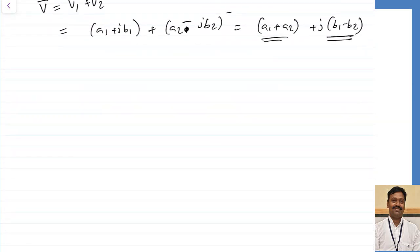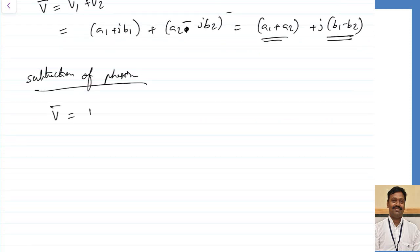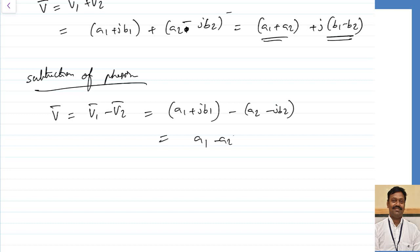For subtraction of phasors, V1 minus V2 equals (A1 plus jB1) minus (A2 minus jB2), which becomes (A1 minus A2) plus j(B1 plus B2). This way we can calculate very easily.